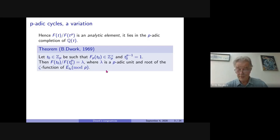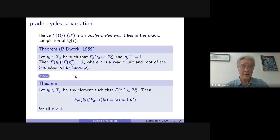If you compute the value of this analytic continuation at a p-adic integer t_0 (with the p-minus-first root of unity condition), you get a p-adic unit lambda. This p-adic unit turns out to be a root of the zeta function of the elliptic curve E_{t_0}. This was basically a formula of Dwork — an analytic formula for something discrete like a zeta function of this variety.